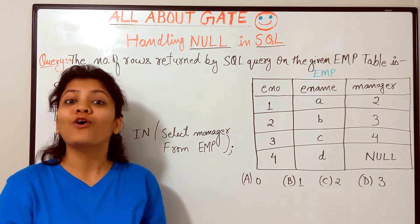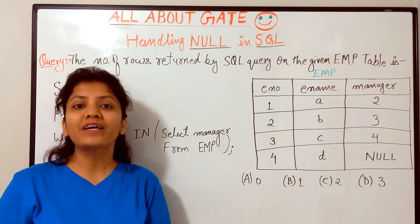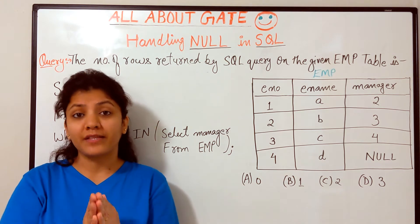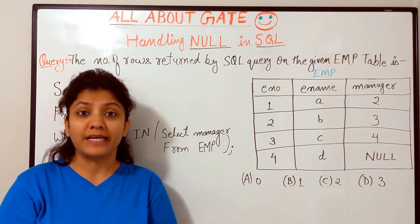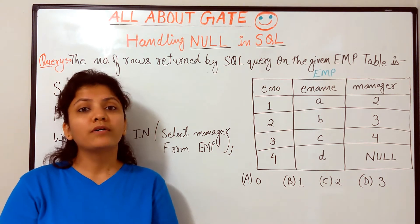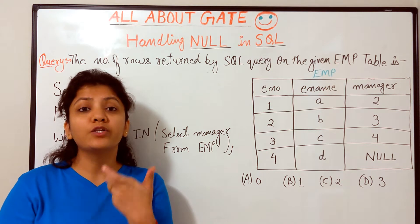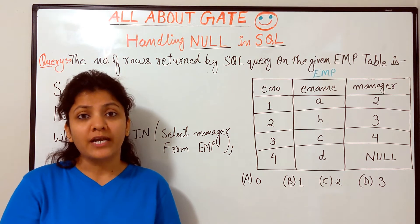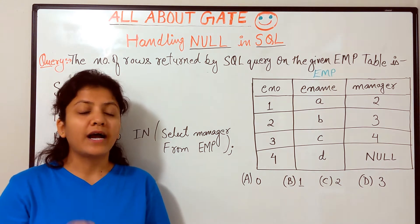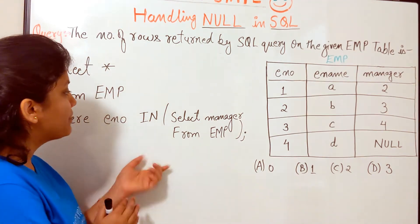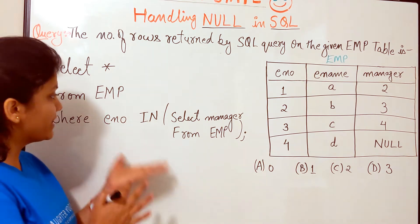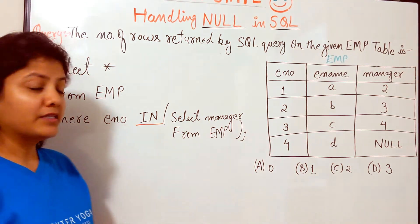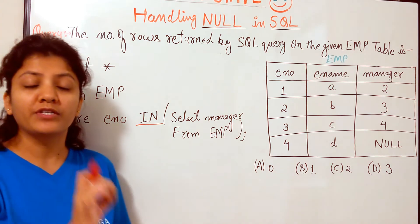Welcome to the YouTube channel where we talk about the GATE exam and we are studying DBMS. We are learning how SQL query output might change based on null values present in a relation. In the previous video we saw how null values in the NOT IN clause behave. In this video we will see the same thing with the IN clause. Everything is the same from the last example except the clause has changed from NOT IN to IN, and this will change the output entirely.